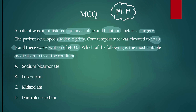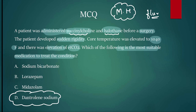Sensitive patients given succinylcholine or fluorinated anesthetics like desflurane, isoflurane, or sevoflurane may develop muscle rigidity, high temperature — the condition called malignant hyperthermia. The drug of choice is dantrolene, which inhibits the ryanodine receptor 1 in the muscle and relaxes it. Dantrolene is also the drug of choice for neuroleptic malignant syndrome. The answer here is dantrolene sodium. Remember: drug of choice for both neuroleptic malignant syndrome and malignant hyperthermia is dantrolene.